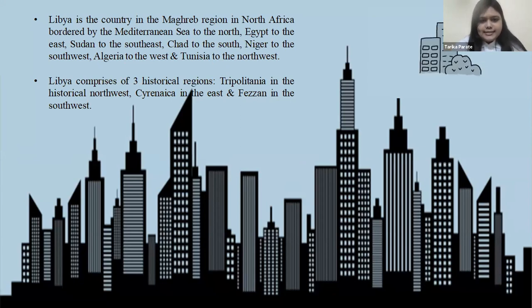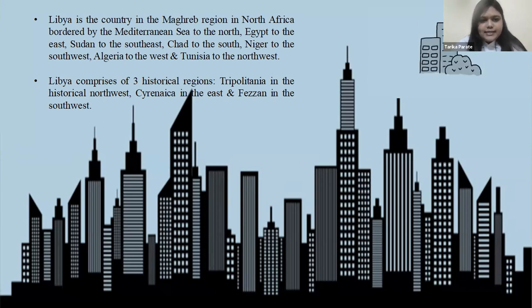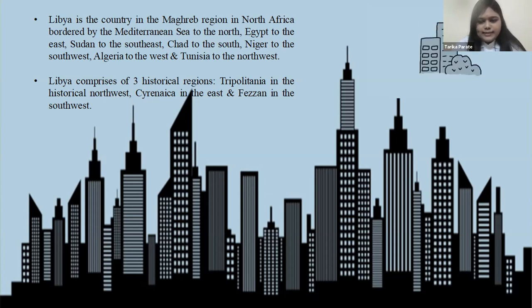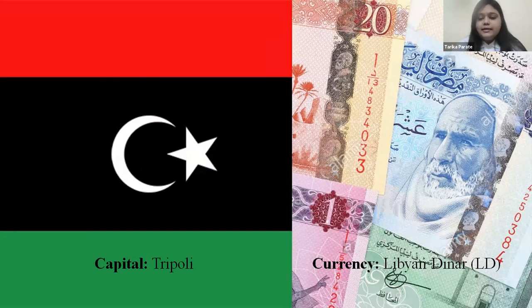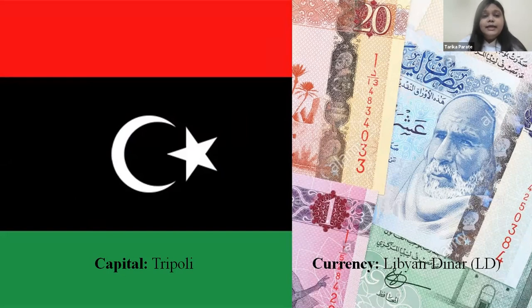Libya comprises three historical regions: Tripolitania in the northwest, Cyrenaica in the east, and Fezzan in the southwest. Libya has an area of almost 700,000 square miles and is the fourth largest country in Africa. The capital is Tripoli, which is located in western Libya and contains over 3 million people.